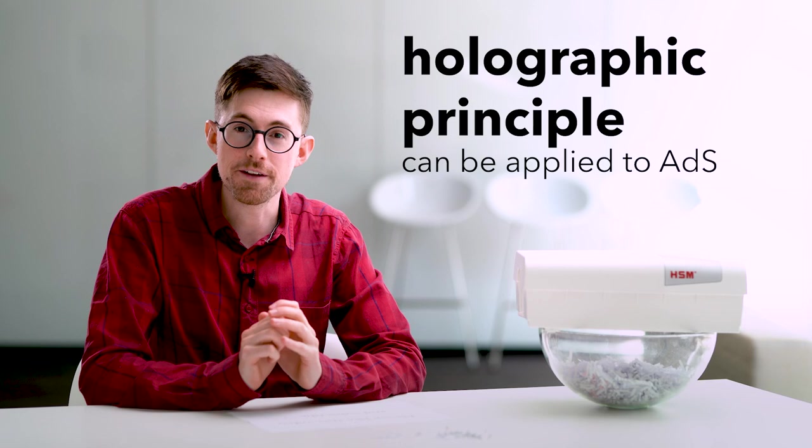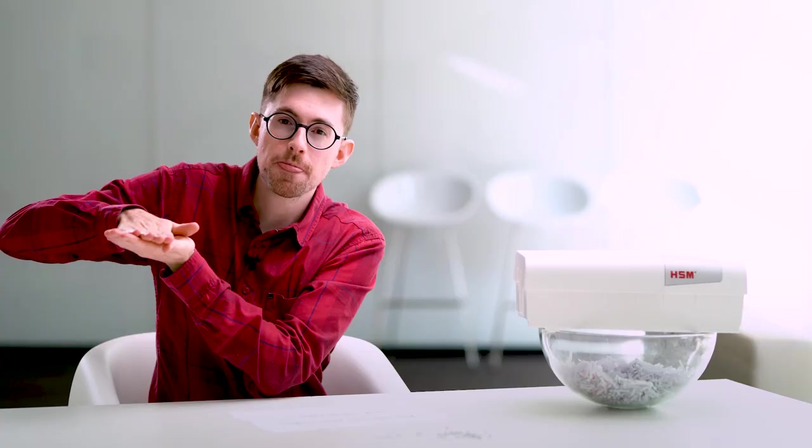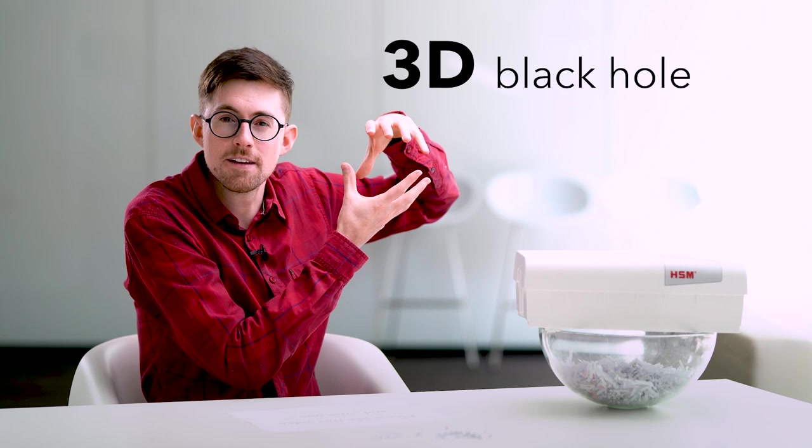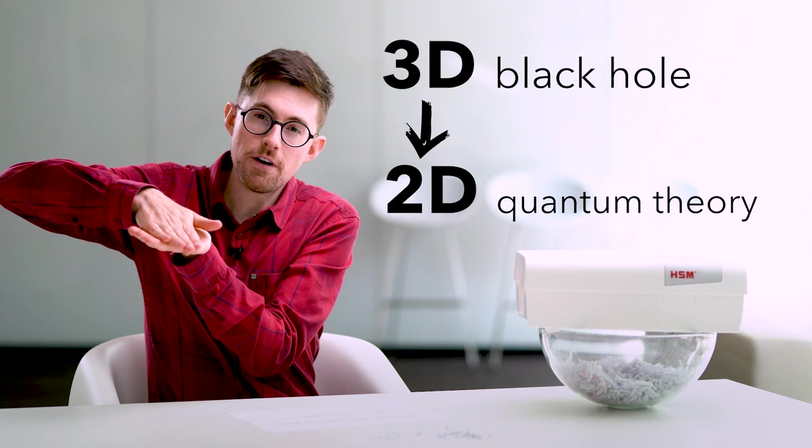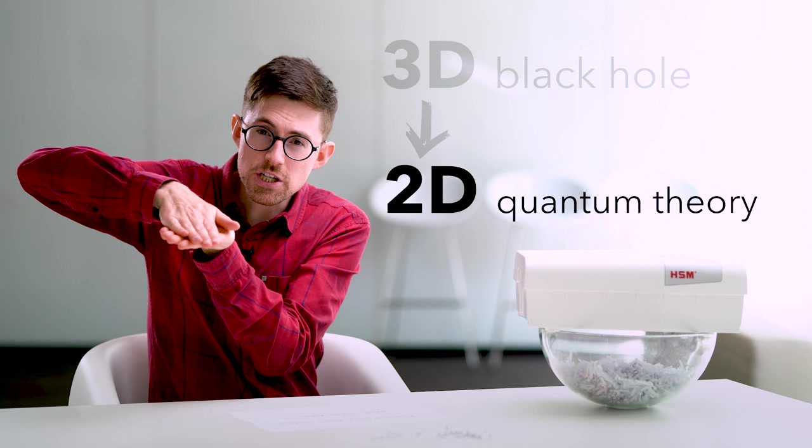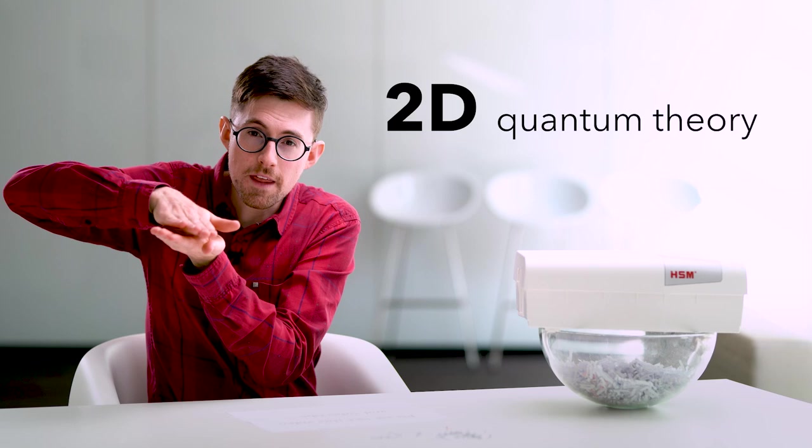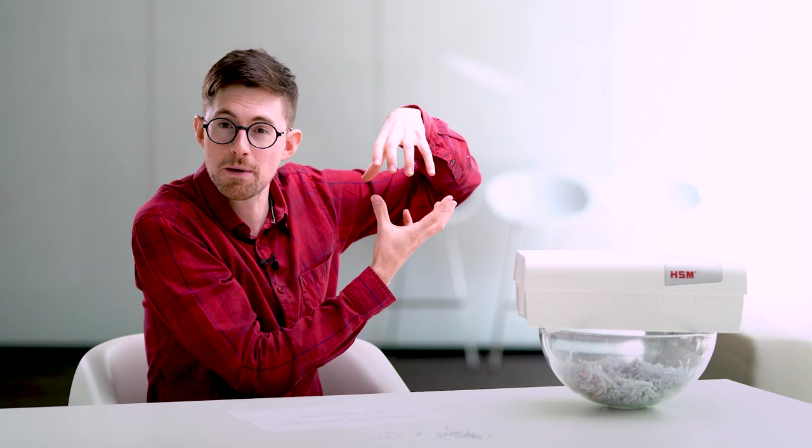So the holographic principle tells us that the three-dimensional universe, and everything happening inside, is equivalent to a two-dimensional quantum theory. So we can describe everything in this three-dimensional anti-de Sitter space, like the black hole, in terms of this quantum theory. Now, as I told you, we know that in this quantum theory information can never be destroyed. It can only be moved about and scrambled. But then, because it's equivalent to the three-dimensional ADS black hole over here, also information in the black hole can never be destroyed.